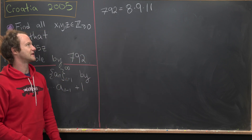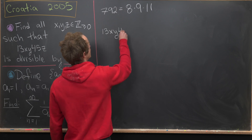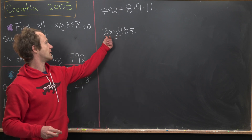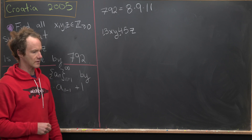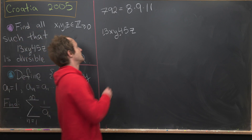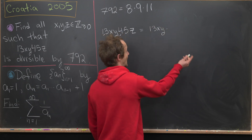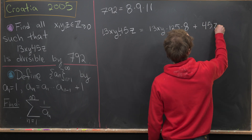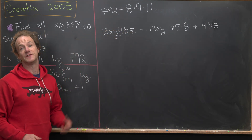Let's first see what it takes for 13xy45z to be divisible by 8. Notice that the 13xy part is a multiple of 1000, and 450z is what's left over. Since 1000 is a multiple of 8, we only need to worry about the 45z part. We write 1000 as 125 times 8, so for 8 to divide the whole number, 8 must divide 45z.